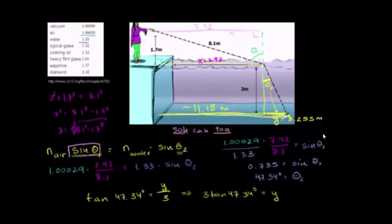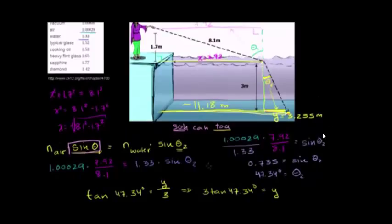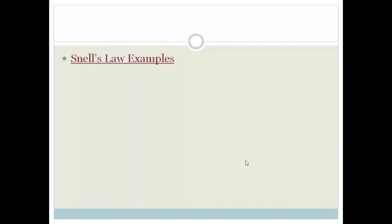Hopefully you found that useful. It was a more involved Snell's Law problem, but the hard part was really just the trigonometry — recognizing you didn't need to know theta 1 directly because you had all the information for its sine. We used that in Snell's Law to find theta 2, then used tangent to find the incremental distance. Grade 11s, please go through it step by step, explain it to your friends, and do the assessment at the end of the section. Have a lovely day.